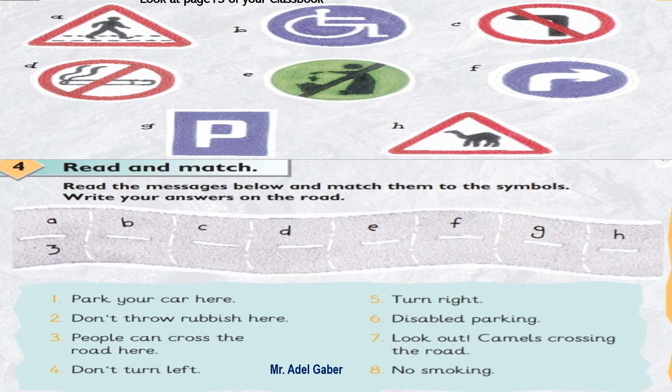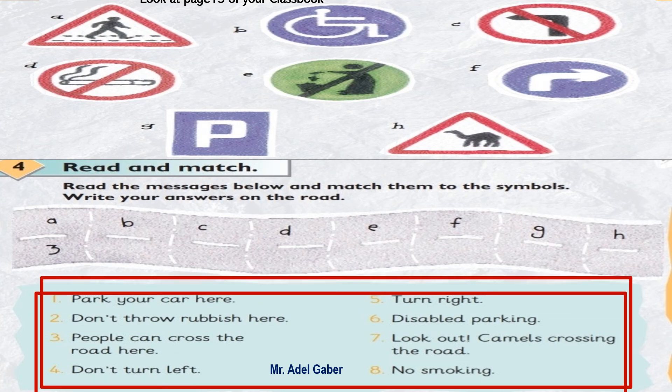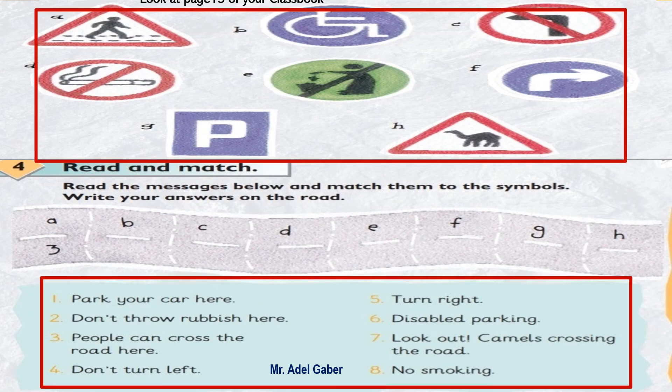Look at your class book page 13, Activity 4: Read and match. Read the messages below and match them to the symbols. Write your answers on the road. The first one is done for you — it's symbol number A. What does it mean? Number 3: people can cross the road here. Now complete the rest of the task on your own.